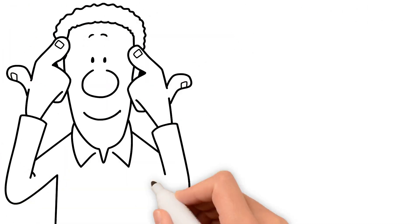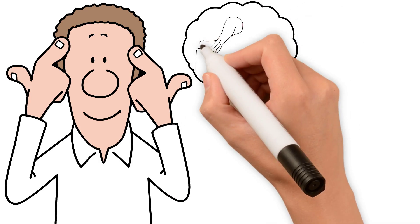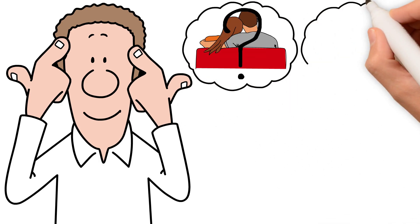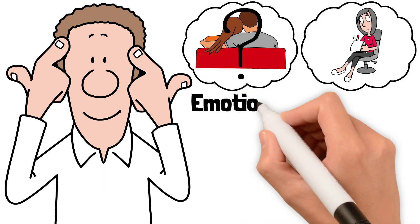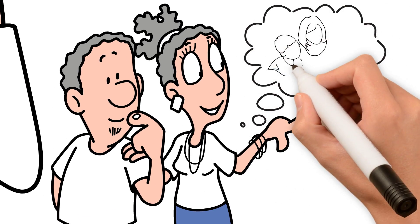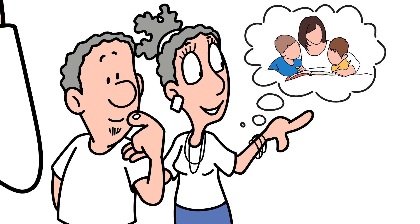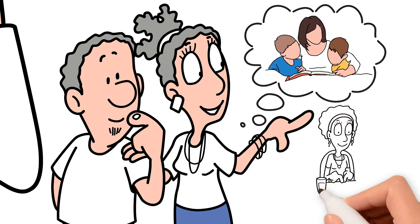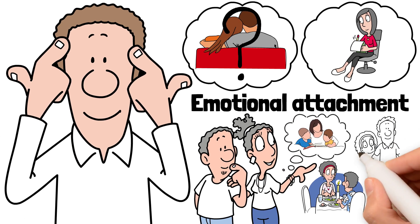Beyond biology, psychology plays a key role in why we fall in love. Psychologists suggest that our emotional attachment may be influenced by past experiences, such as relationships with our parents and life experiences. This makes us subconsciously seek a partner who meets our emotional needs, ones we formed in childhood.